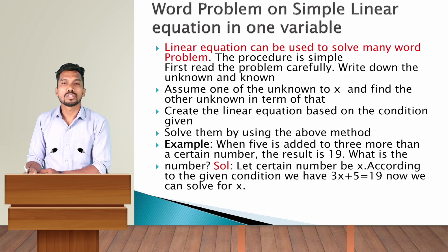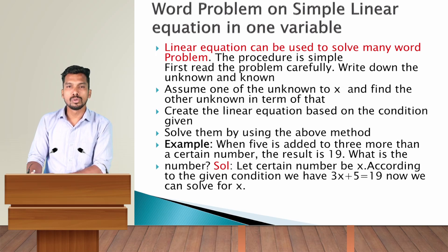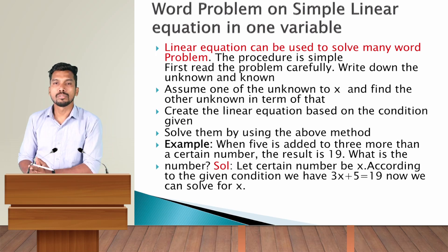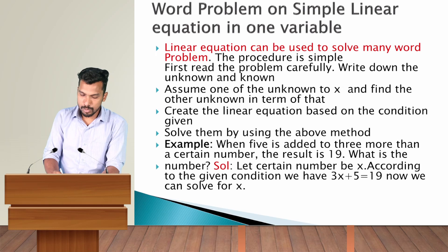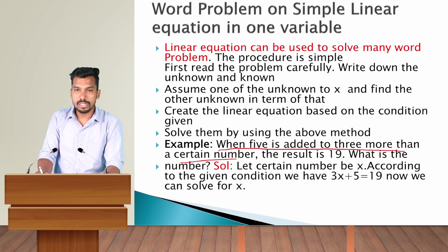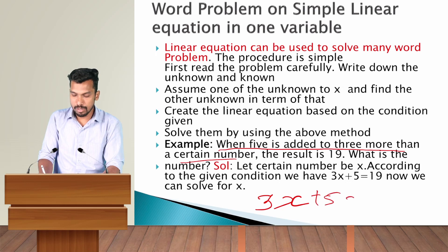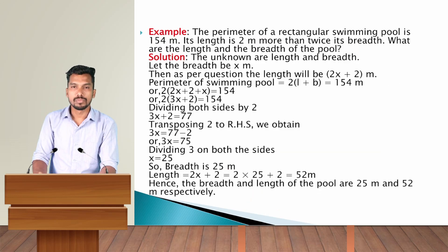Linear equations can also be used to solve word problems. The procedure is: first, read the problem carefully and write down the unknown and known terms. Second, assume one of the unknown terms as x and find others in terms of it, then create the linear equation based on the given condition. For example, when 5 is added to 3 more than a certain number the result is 90 — let that number be x, so 3x plus 5 equals 90.